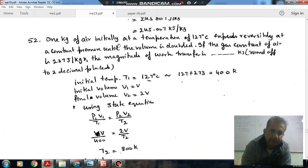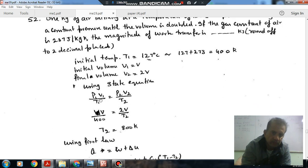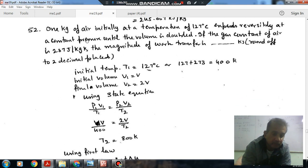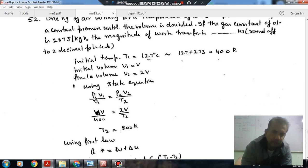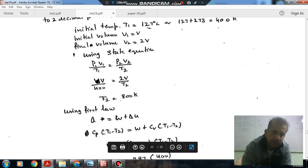Next, one kilogram of air initially at temperature of 147°C expands reversibly at constant pressure until the volume is doubled. If the gas constant of air is 287 joule per kilogram kelvin, the work transfer is dash kilojoules. Now initial temperature is 147°C or 420 Kelvin. Let initial volume be V, and as during the process the volume is doubled, finally volume is 2V. And the process is constant pressure.